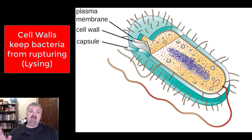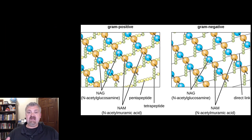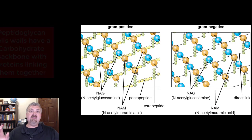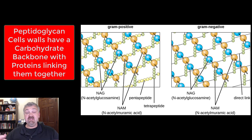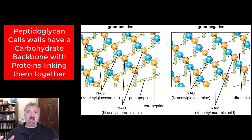Most bacteria are going to have either a gram-positive or a gram-negative cell wall. They're called peptidoglycan cell walls — the 'peptide' tells you there's a protein component and 'glycan' tells you there's a glucose or carbohydrate component.